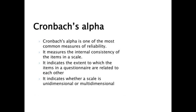What is Cronbach's Alpha? Cronbach's Alpha is one of the measures of reliability. Specifically, it measures the internal consistency of the research tool or items within the tool — whether it is a questionnaire, survey checklist, rating scale, or whatever it may be. It indicates the extent to which the items of a questionnaire are related to one another — whether one question is related to the other questions.